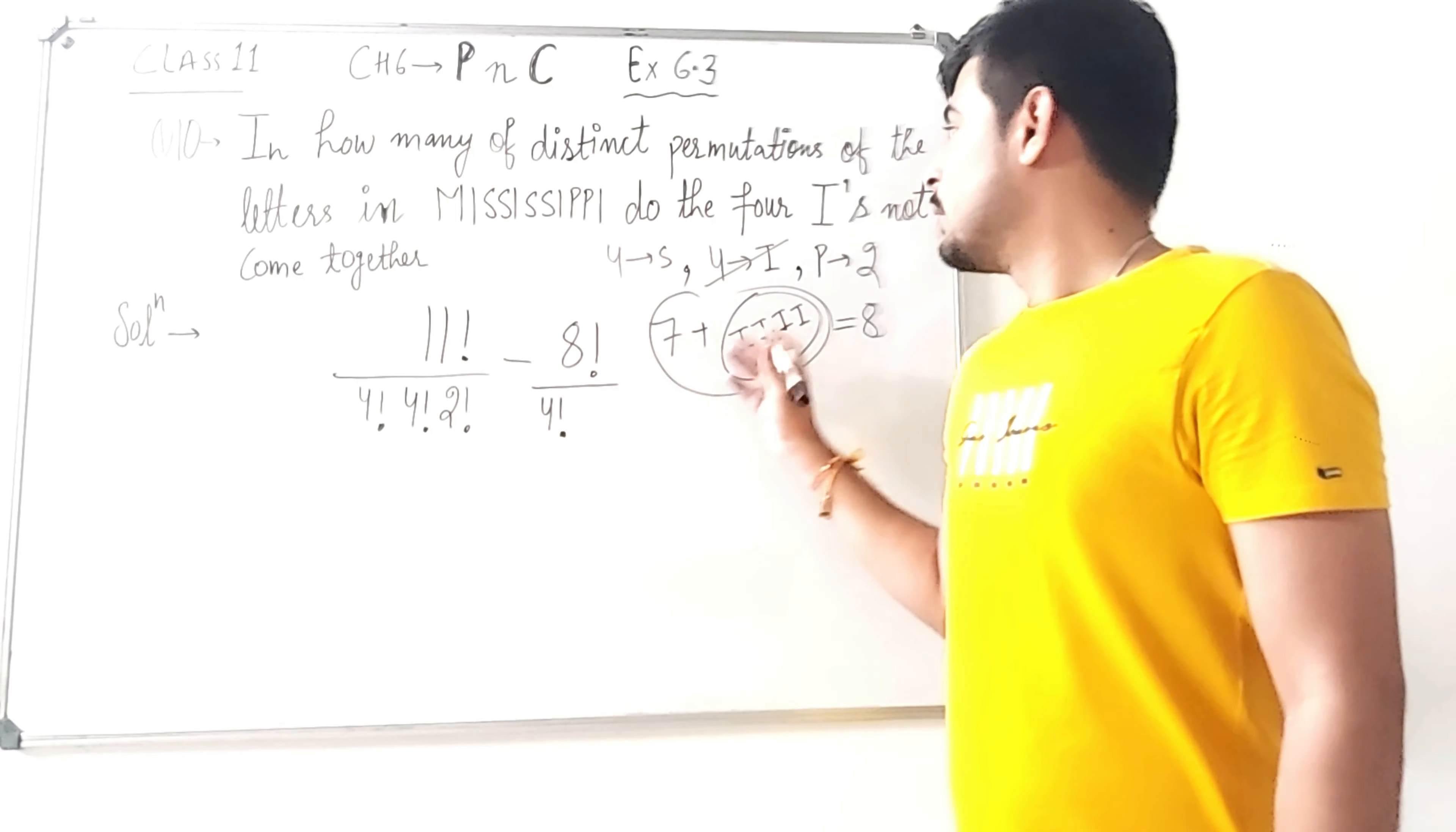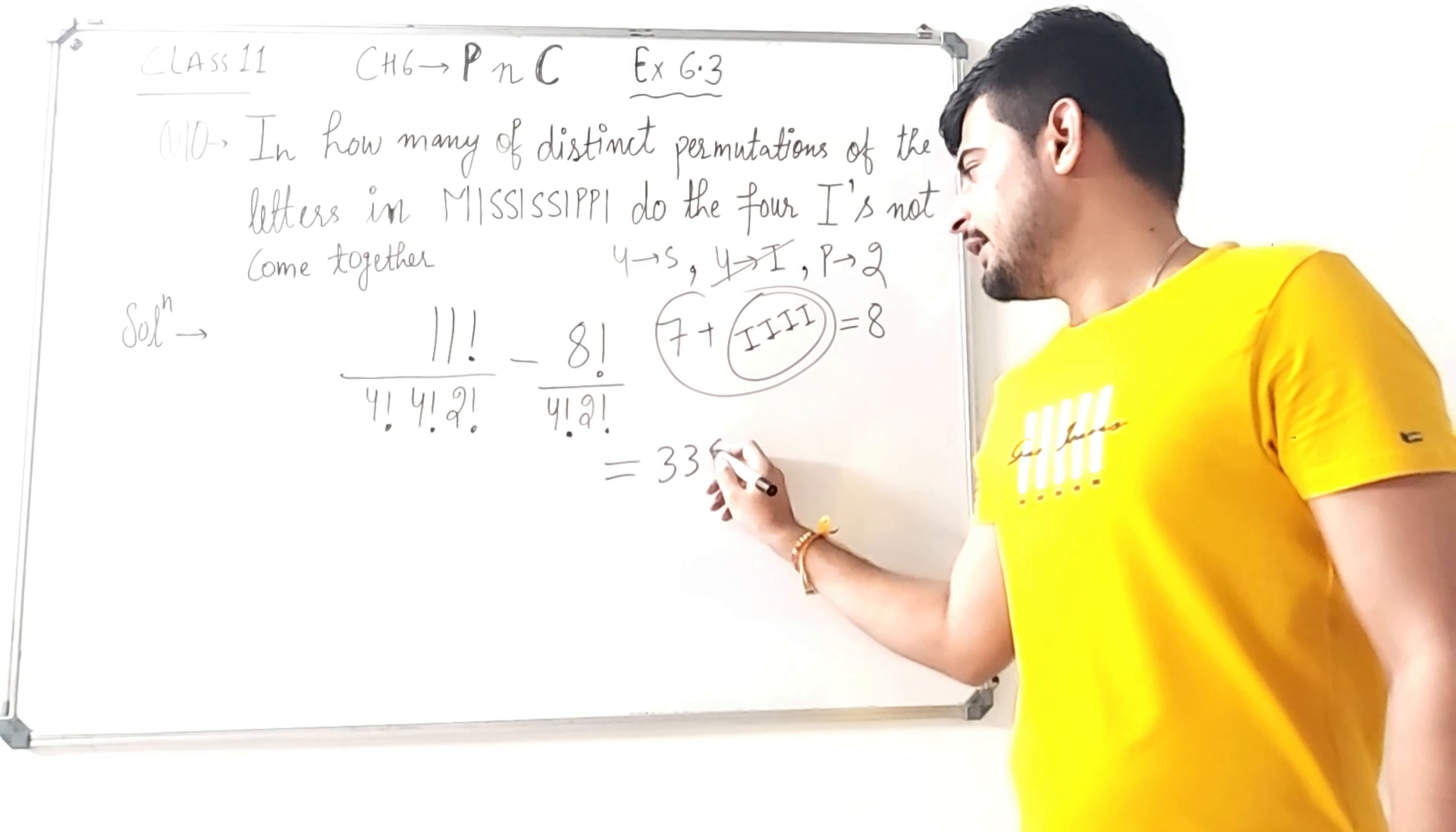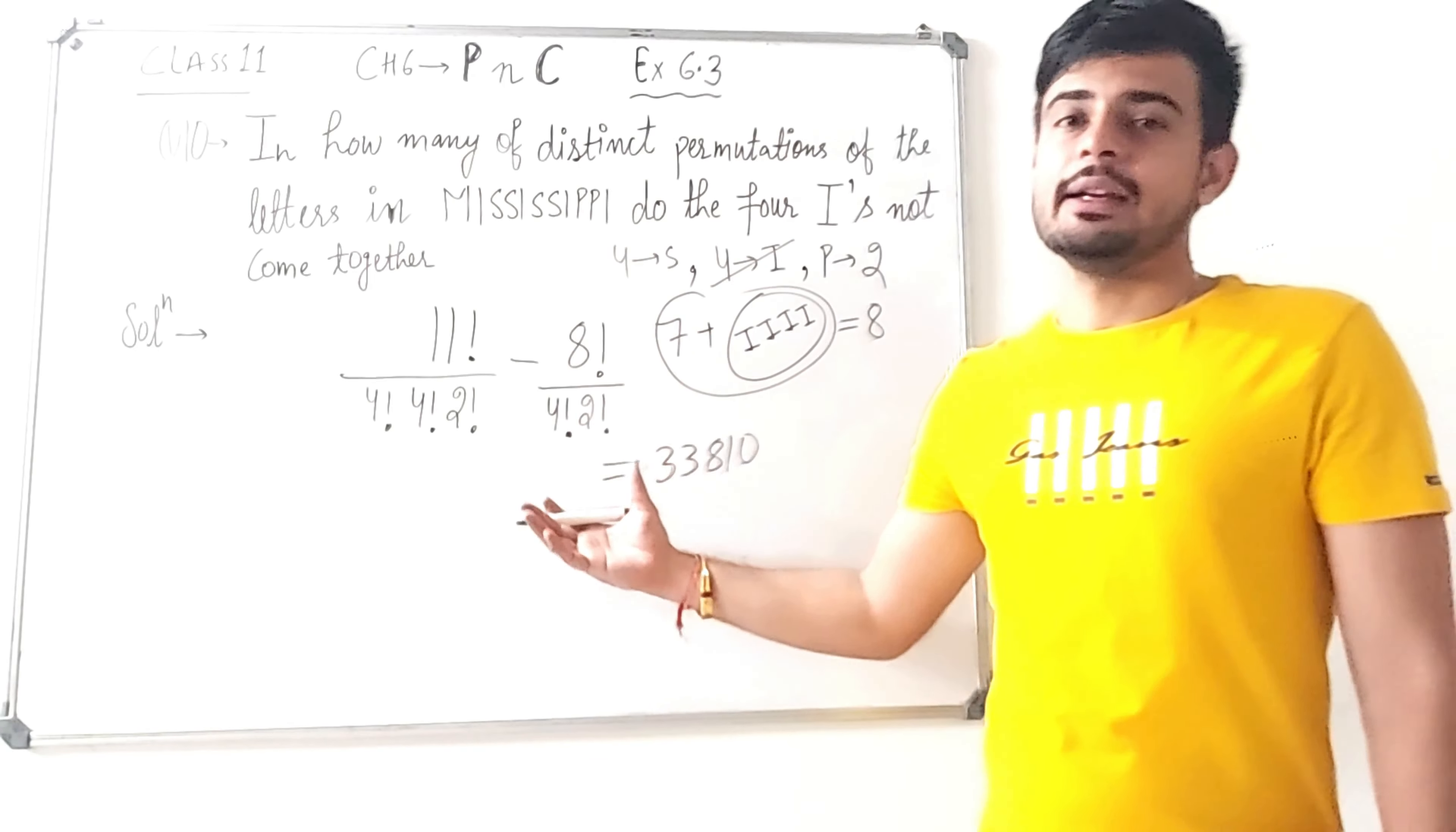Now we have 4 I's here in a bag, now remaining 4 factorial will be S's and P's will be 2 factorial. And when we solve them our answer is 33810. I hope you all can solve them. Here we will take LCM.